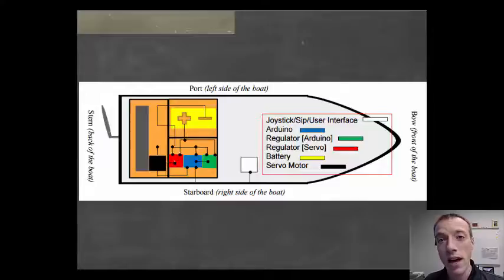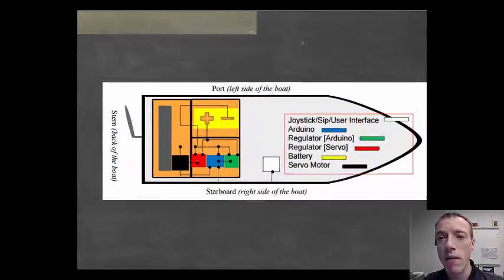They're thinking about exactly how does the user interface with this. They have an Arduino which is going to control the system. They have a regulator for the Arduino and one for a servo. And then there's a battery that powers the whole project and then the servo motor. All of those things combine to be able to control the steering. That's how they broke down their project into sub-components and looked at what connects with what.